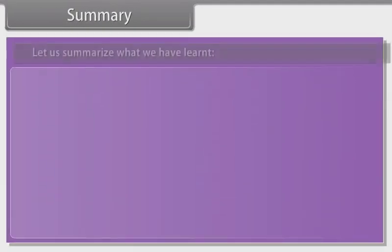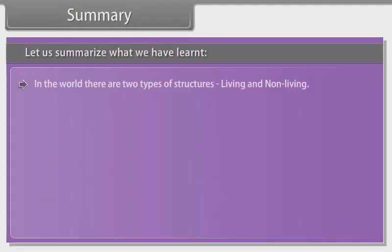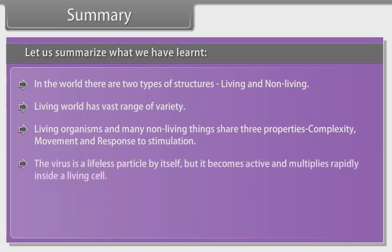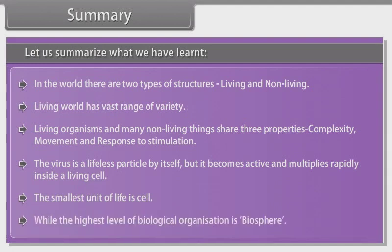Let us summarize what we have learned. In the world there are two types of structures: living and non-living. Living world has vast range of variety. Living organisms and many non-living things share three properties: complexity, movement and response to stimulation. The virus is a lifeless particle by itself but it becomes active and multiplies rapidly inside a living cell. The smallest unit of life is cell. While the highest level of biological organization is biosphere.